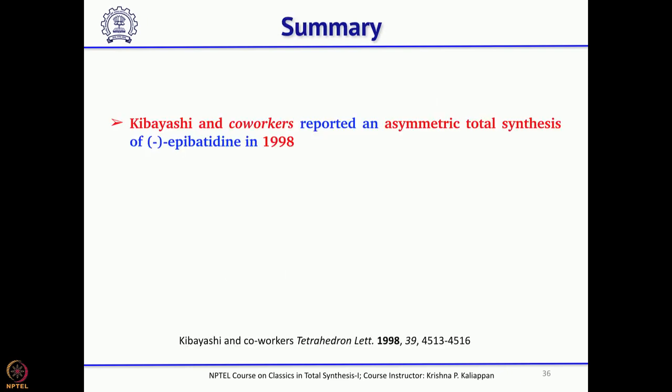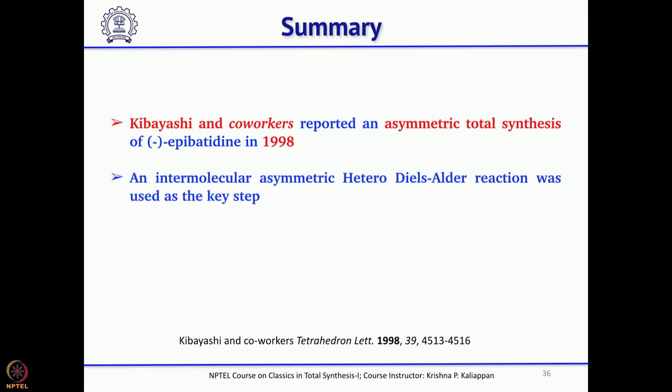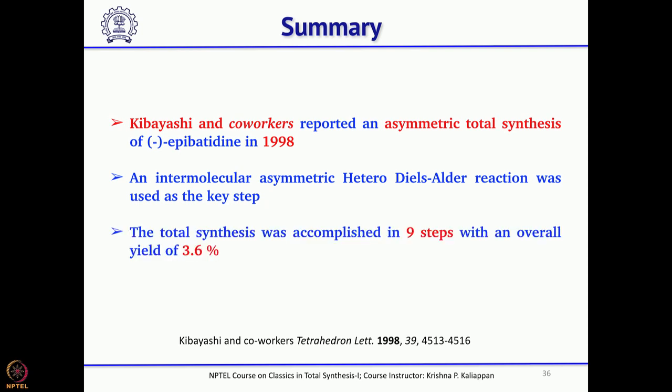To summarize, Kibayashi reported an asymmetric total synthesis involving an intermolecular asymmetric hetero Diels-Alder reaction as the key step. The number of steps involved in this total synthesis was 9 and the overall yield was about 3.6 percent. With this, we have completed the total synthesis of epibatidine. We will now move to total synthesis of two more alkaloids before looking into total synthesis of steroids. Thank you.